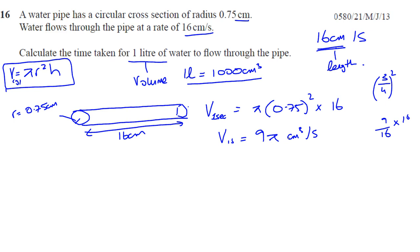That is the volume flowing every second. It says calculate the time taken for one liter to flow through the pipe. Now imagine you had some sort of container, say this container was 10 liters, and every second you are filling it with two liters. How many seconds would it take for this to fill up? Five seconds. You take the volume of the container, divide it by how much water is going in every second.